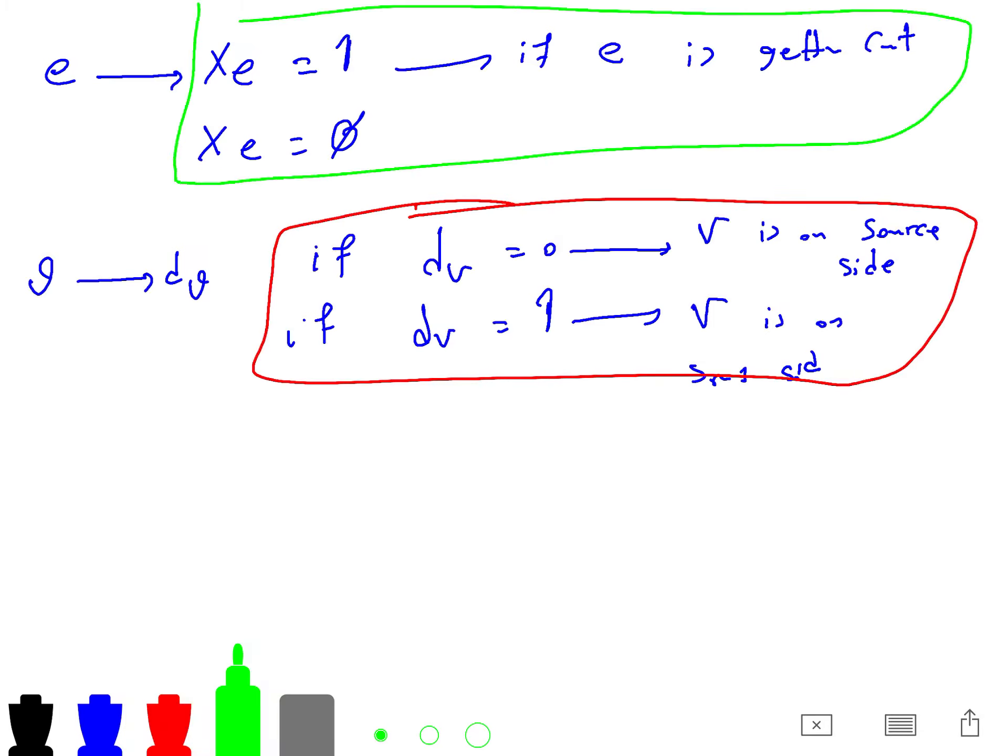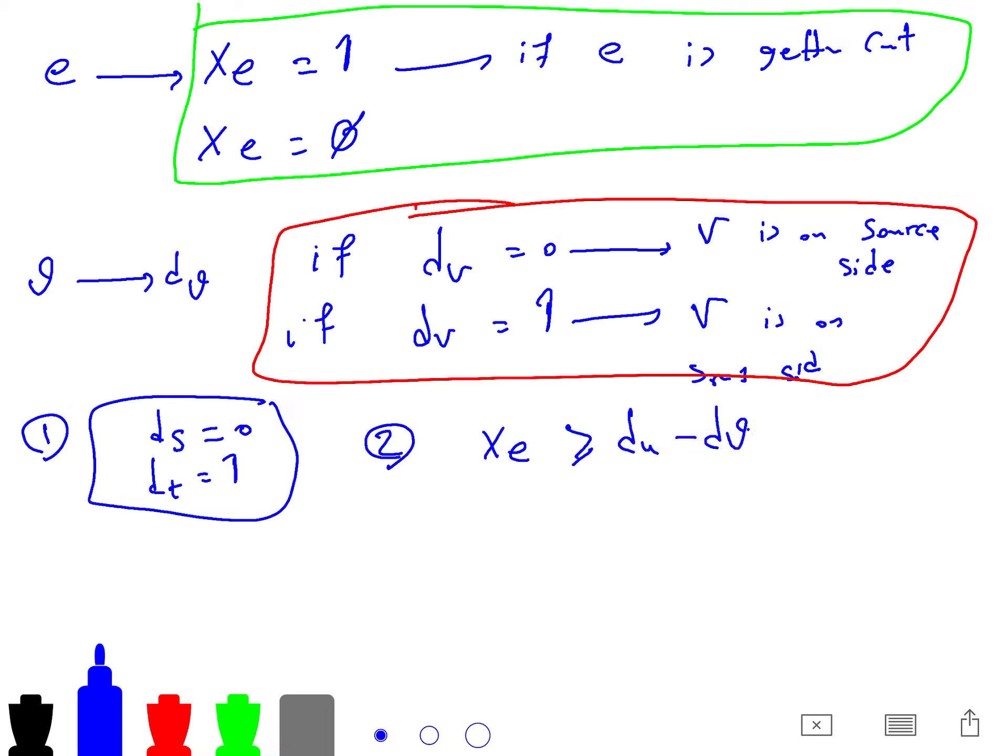So for vertices, we have these variables. For edges, we have this variable. And we have two constraints to solve that problem. The first constraint is that D of S equal to 0. It means that let S to be on the source side of the cut. And D of T equal to 1. It means that let T be on the sink side of the cut. So this is constraint 1. The second constraint is that X of E. So this really mimics the problem. X of E is greater than D of U minus D of V. So in other words, X of E is greater than absolute value of D of U minus D of V.